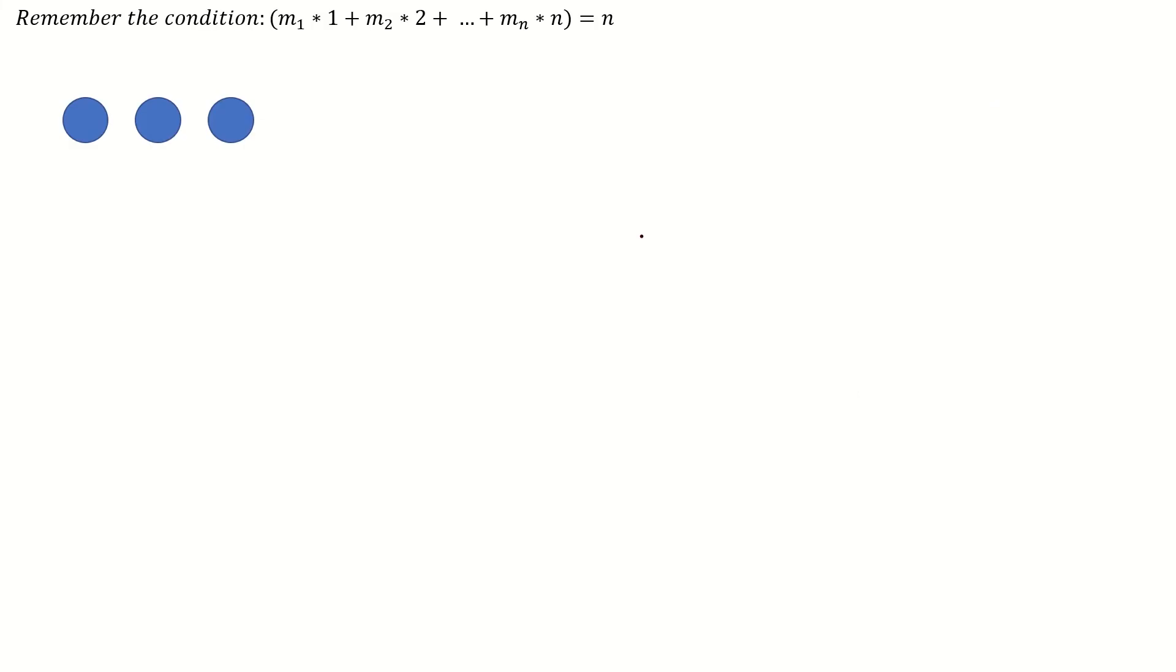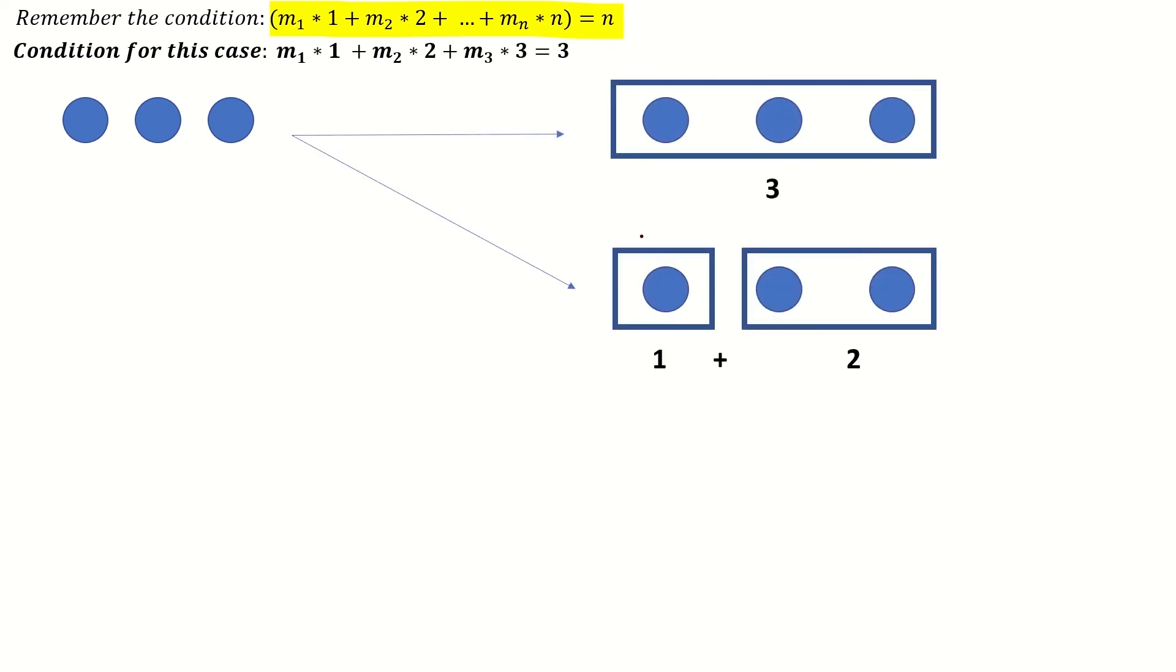This may seem a little complicated, but all we're really doing is listing the different ways of writing n as a sum of positive integers less than or equal to itself. In this case, 3 can be written as 3 or 2 plus 1 or 1 plus 1 plus 1. These are known as integer partitions as we are splitting the integer into parts that can be summed to that integer.